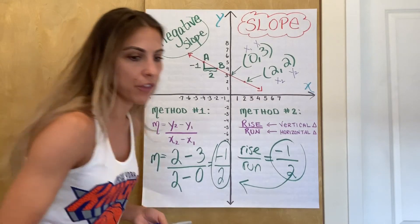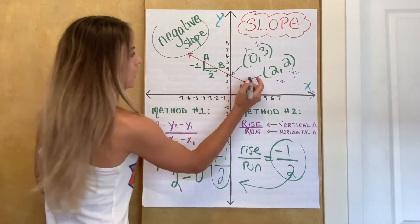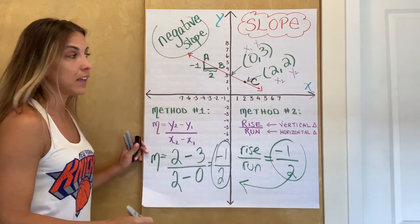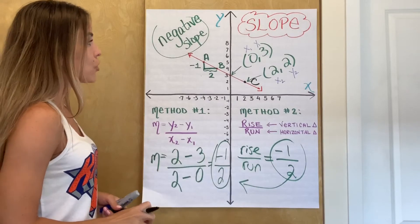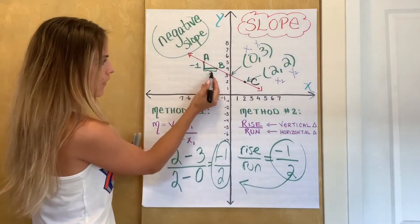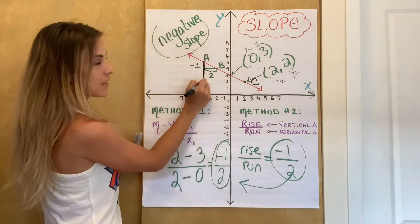And just to show you one other thing, I can choose points that are further away. So let's say I chose to call, let's call this point, point C. Let's say I want to go from A to C instead, and I'm going to use rise over run. So now to get from A to C again, I have to go down, right? But I have to go further down than B. So it's going to be one, two, three.